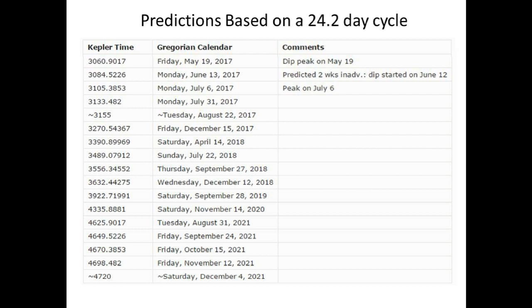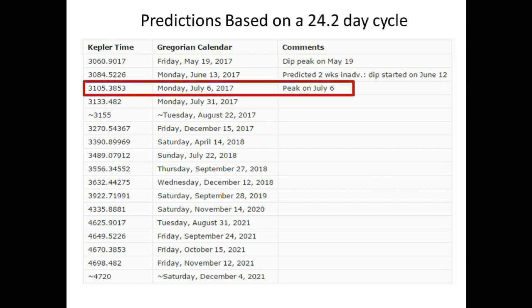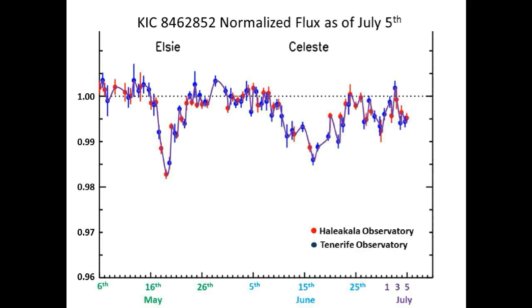Anyway, this gentleman on Reddit used that information and put together a list of predictions of future dips. So far, the first two have happened. The next predicted dip is for July 6th, which is tomorrow. If this really pans out, I will go into more detail about this in an upcoming video. I just wanted to let you guys know.